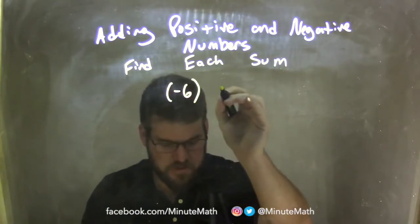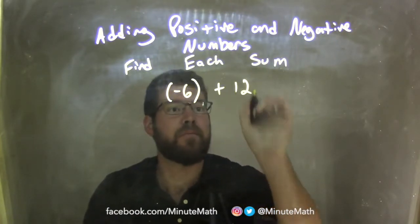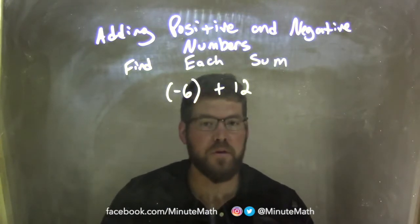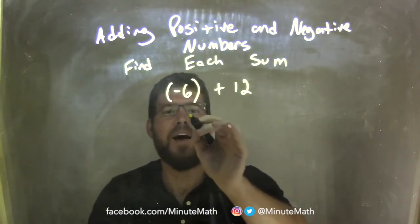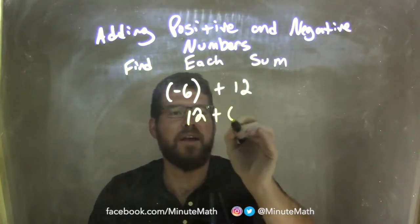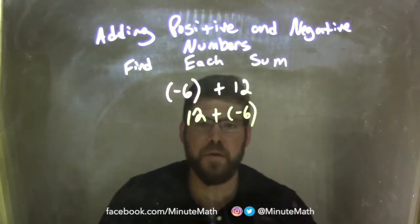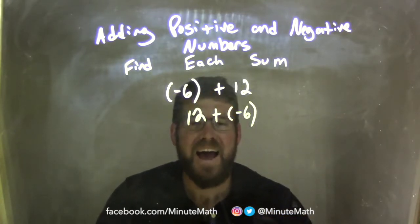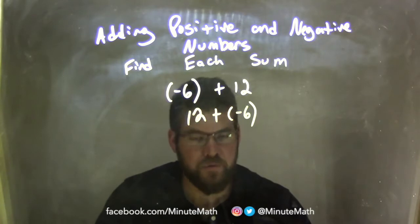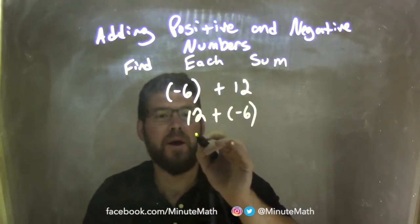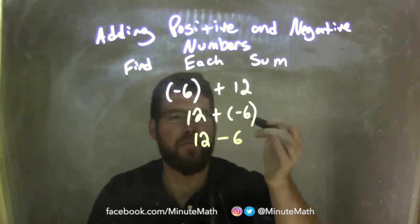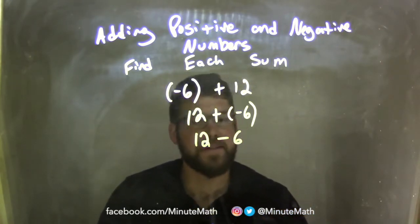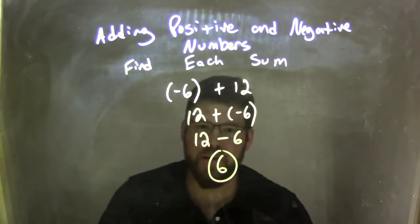Negative 6 plus 12. By the commutative property I can rearrange this to have it as 12 plus a negative 6. Adding a negative is the same thing as subtraction, so I can rewrite this to be 12 minus 6. And we know that 12 minus 6 is 6. There's our final answer.